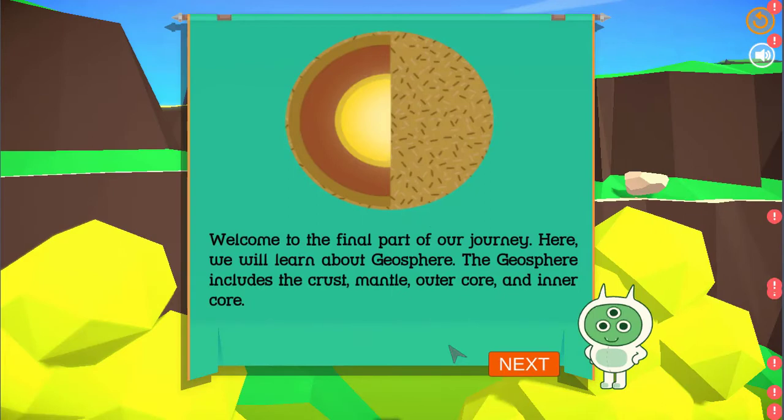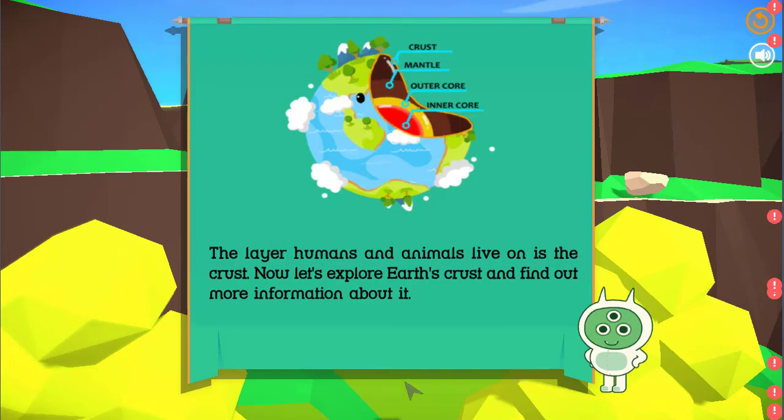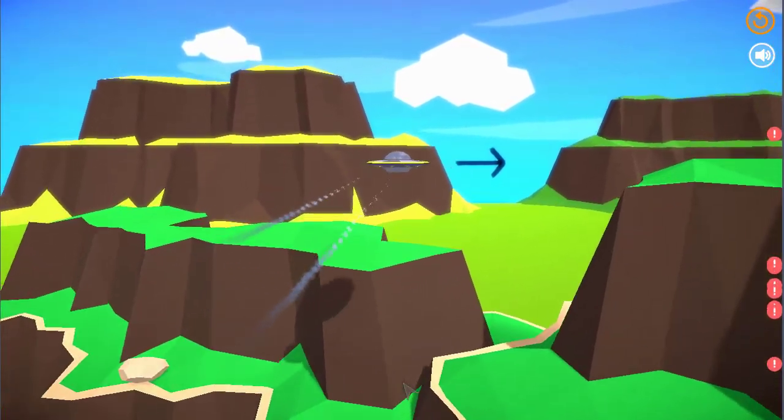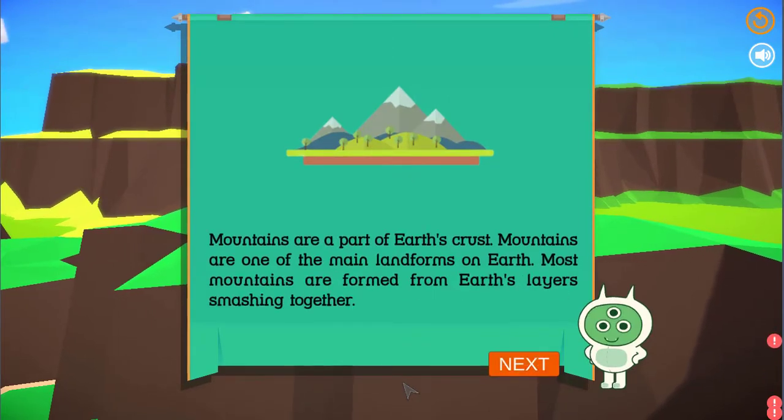Welcome to the final part of our journey. Here, we will learn about Geosphere. The Geosphere includes the crust, mantle, outer core, and inner core. The layer humans and animals live on is the crust. Now let's explore earth's crust and find out more information about it. Mountains are a part of earth's crust. Mountains are one of the main landforms on earth. Most mountains are formed from earth's layers smashing together.